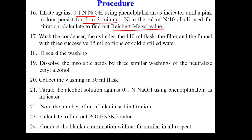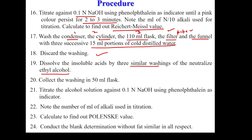Five things must be washed: the condenser, the 110 ml flask, the 25 ml cylinder used to collect drainings, the filter paper, and the funnel — with three successive 15 ml portions of distilled water. Then dissolve the insoluble acids by three similar washings with neutralized ethyl alcohol. All these alcohol washings are collected in a 550 ml flask and titrated against 0.1 normal NaOH using phenolphthalein indicator until pink color appears. Note the ml of alkali used to calculate the Polenske value. The blank determination is also carried out without fat.